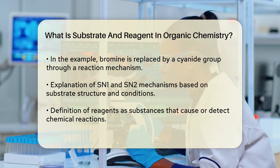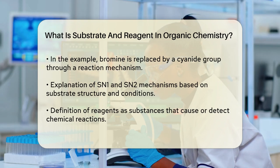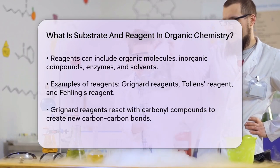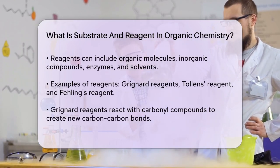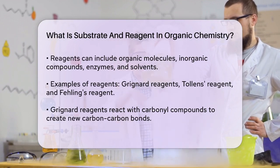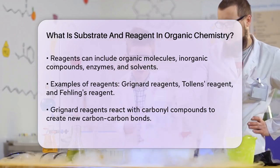Moving on to reagents, these are substances used to cause a chemical reaction or to detect the presence of another substance. In organic chemistry, reagents can be small organic molecules, inorganic compounds, or even enzymes and solvents. They are often used to initiate or speed up reactions.